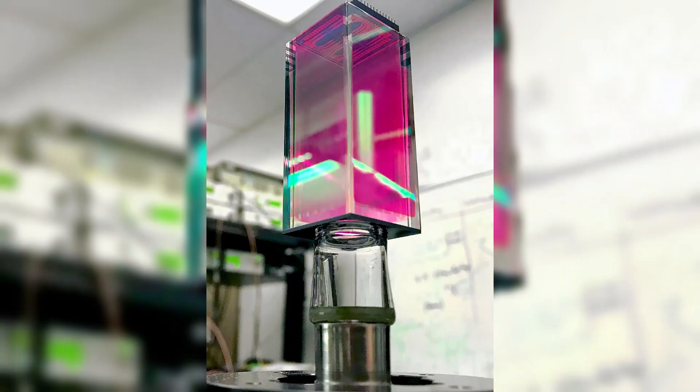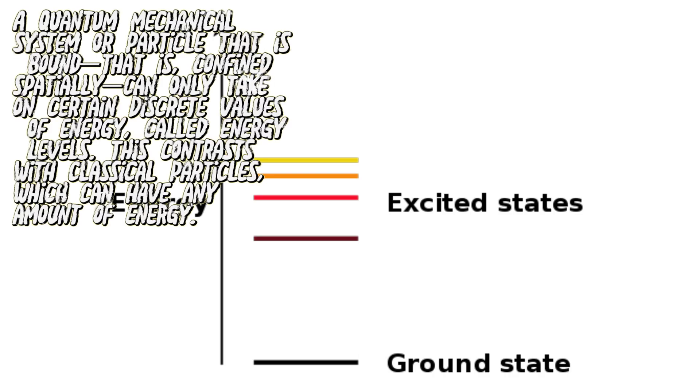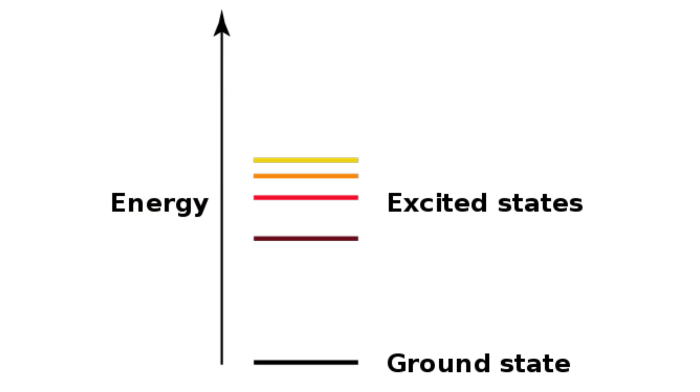A Bose-Einstein condensate is colder than a solid. It may occur when atoms have very similar quantum levels at temperatures very close to absolute zero.